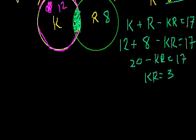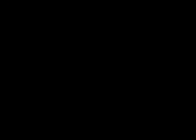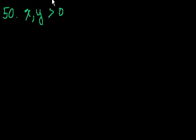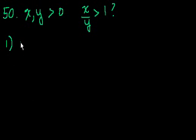Next problem. If x and y are positive, so x, y are both positive, is xy greater than 1 is the question. Statement number 1 tells us xy is greater than 1. So let's see, does that help us at all? And that's not obvious.